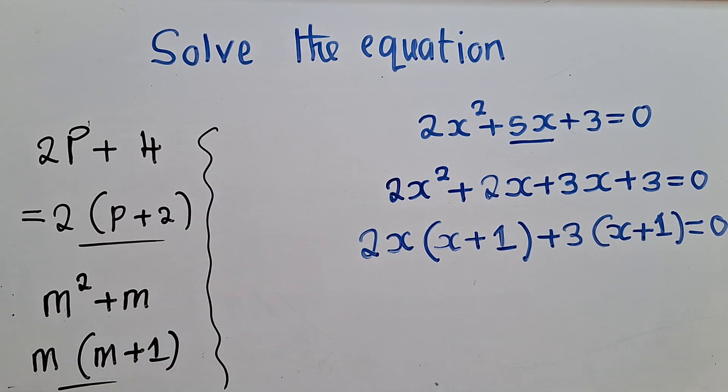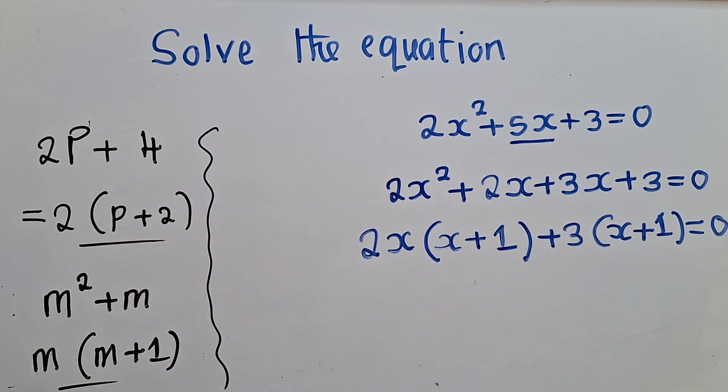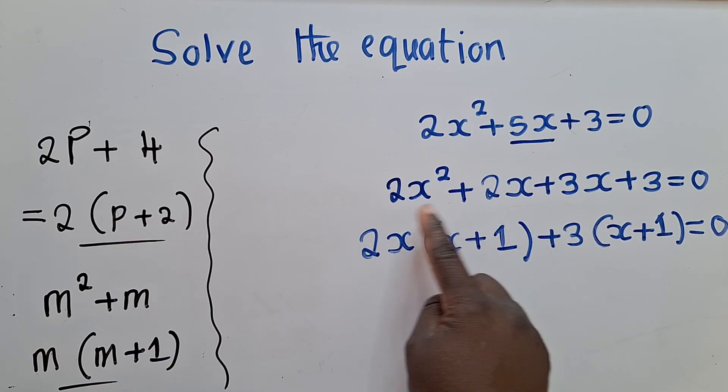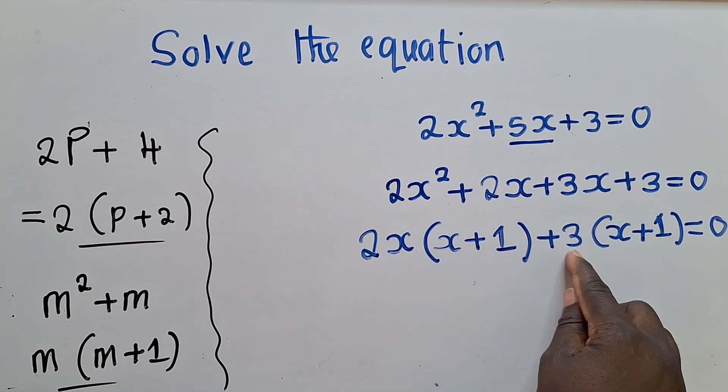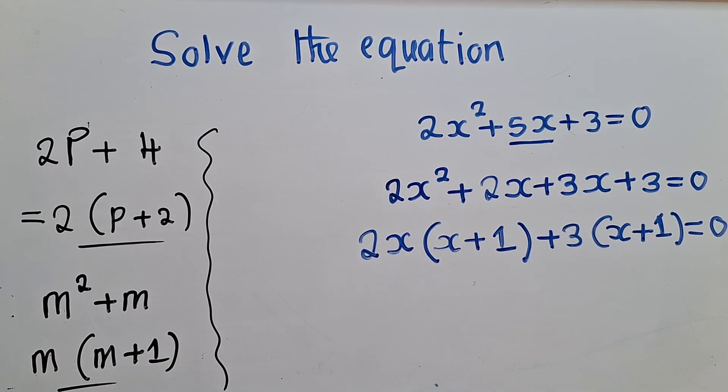You see, this is the concept which has been applied here, right here. Between these two terms, 2x is common. Between these two terms, 3 is common.